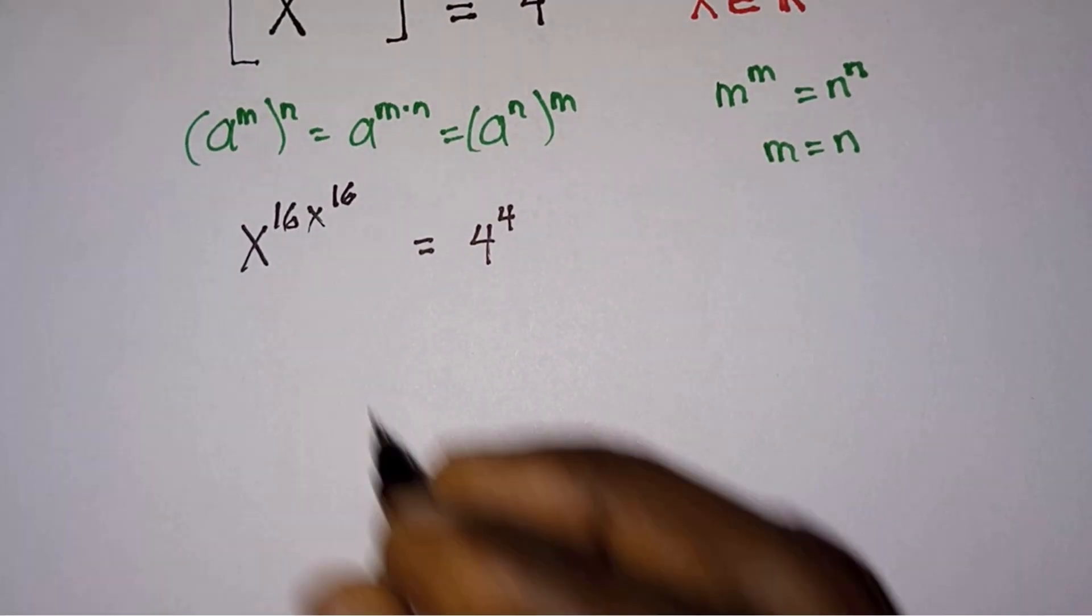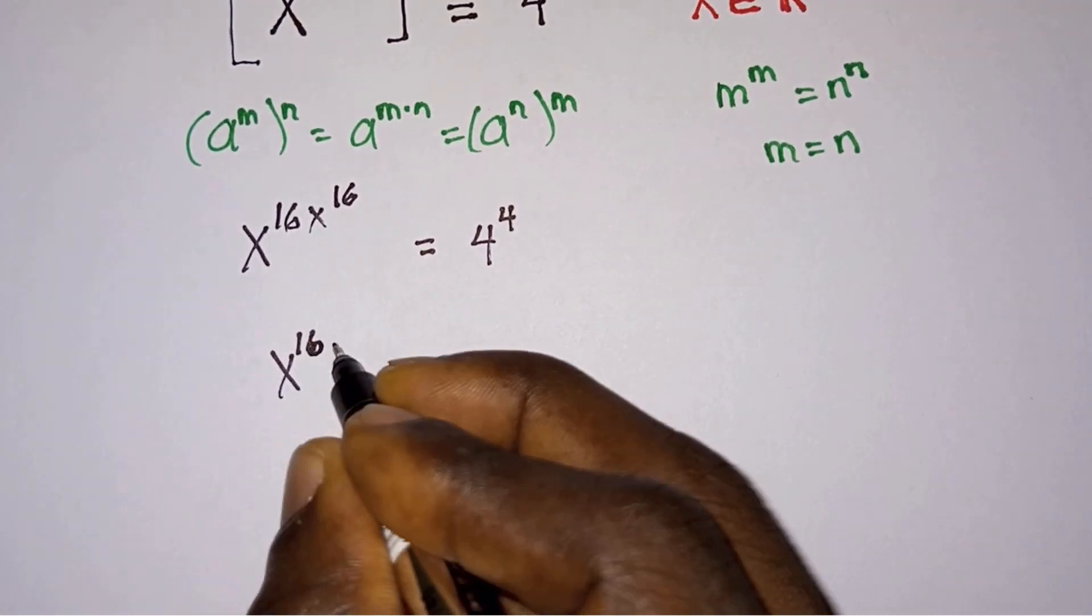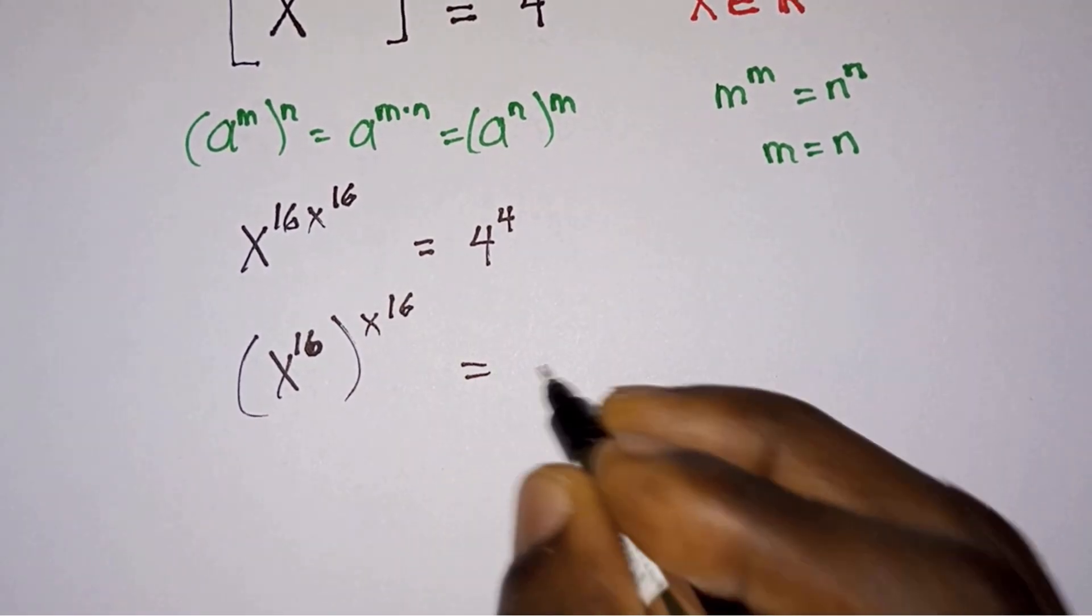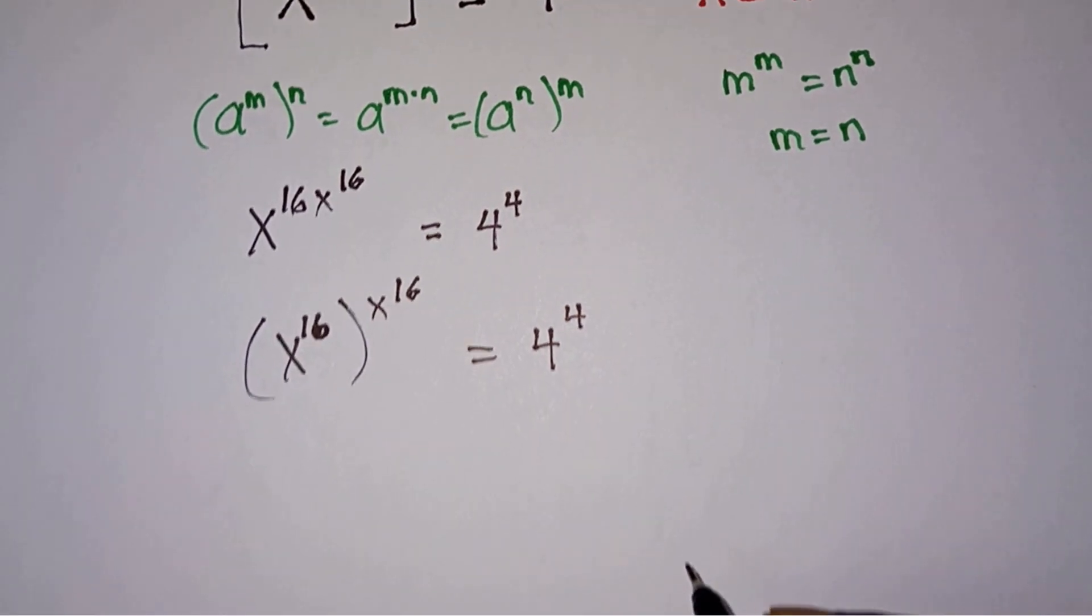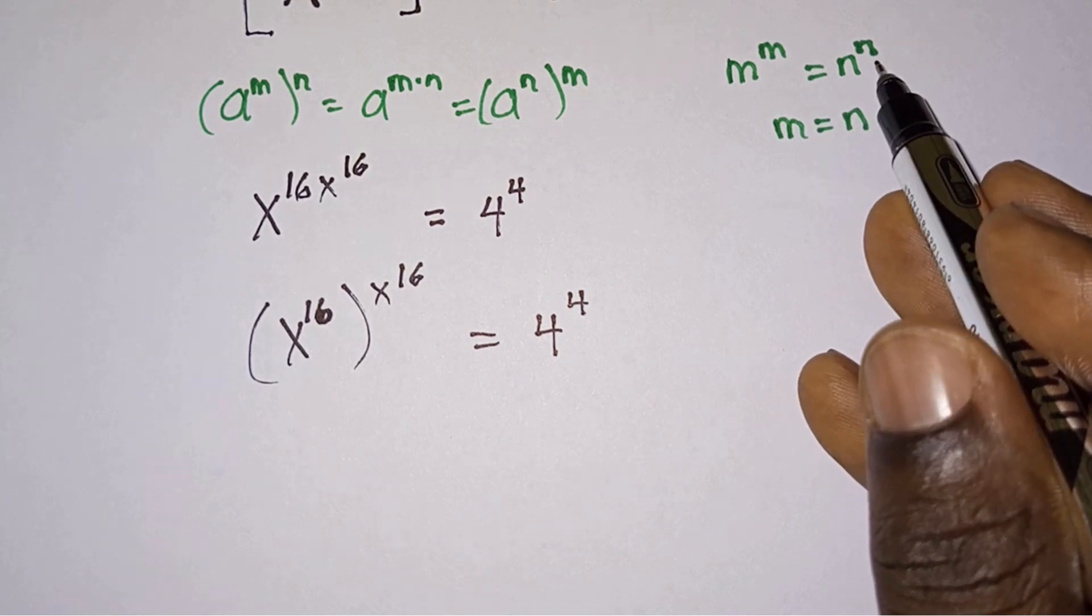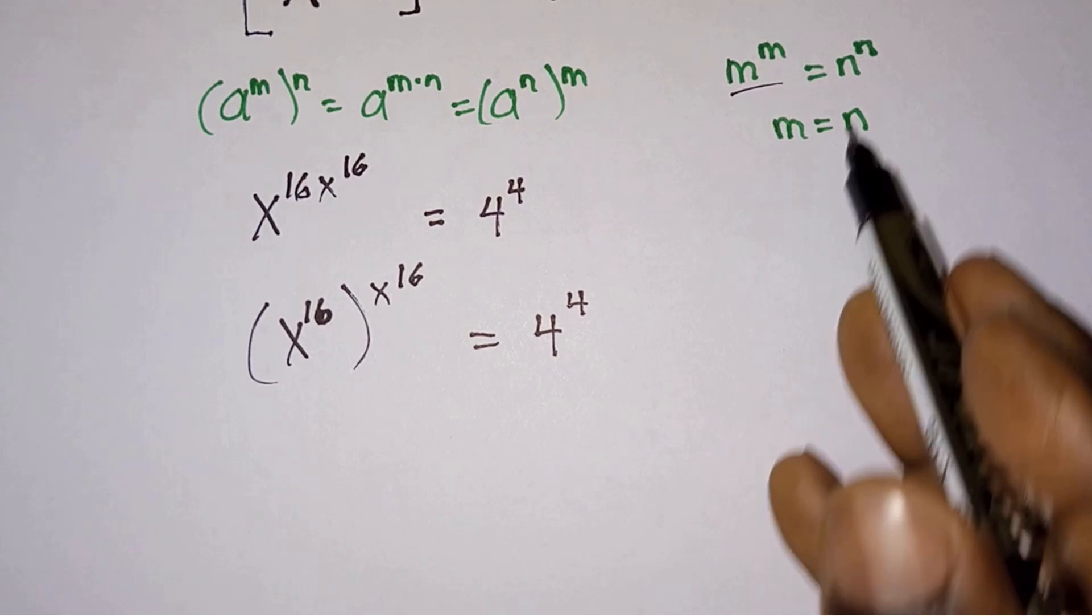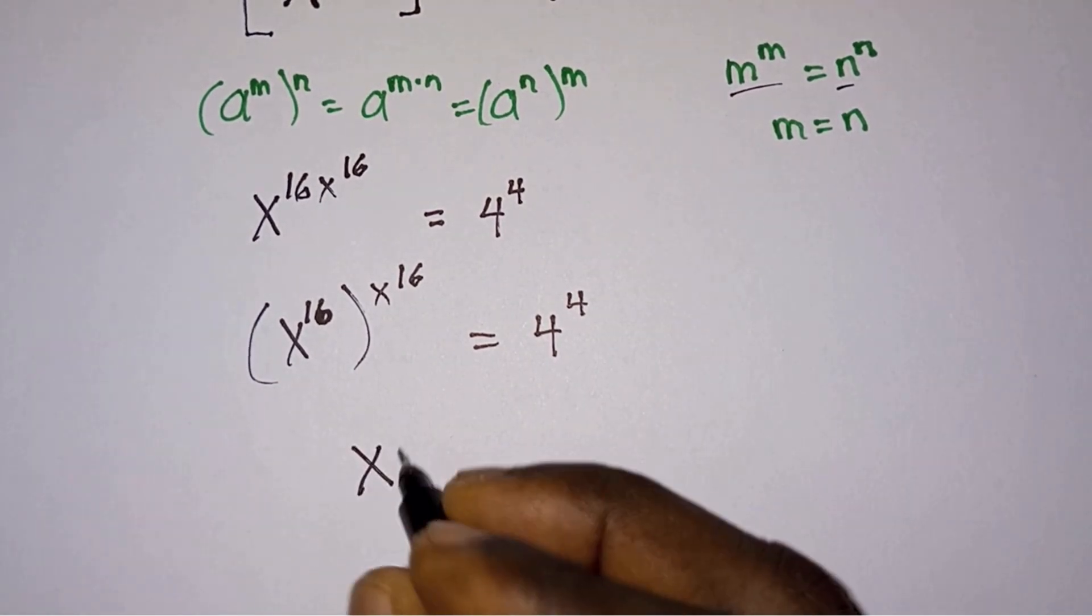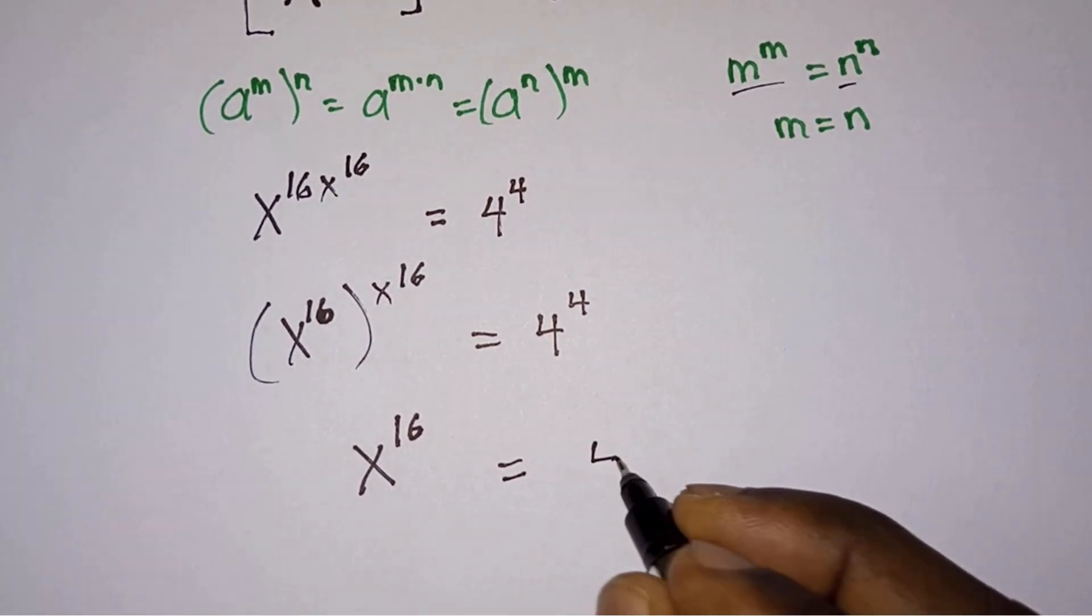And we can rewrite this as x to the power 16 or to the power x to the power 16 is equal to 4 to the power 4. And now we see that this equation is of the form m to the power n equals m to the power n, where m is equal to x to the power 16 and then n is equal to 4. So we can say that x to the power 16 is equal to 4.